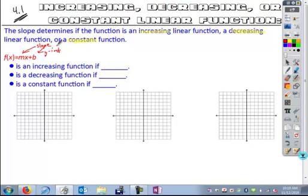When you're looking to see if something is an increasing function, the slope has to be positive. If you're looking at it from a numerical standpoint in the equation, your m value is going to be greater than zero, a positive number.